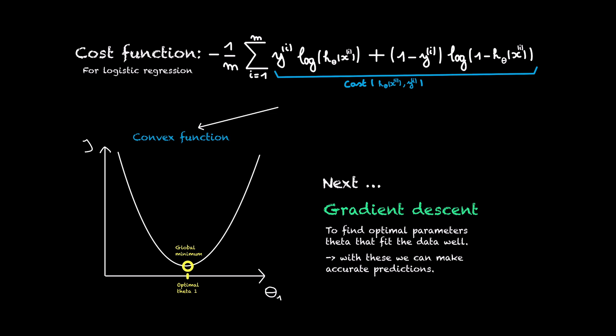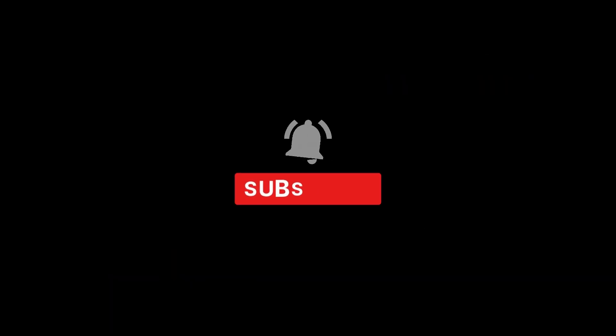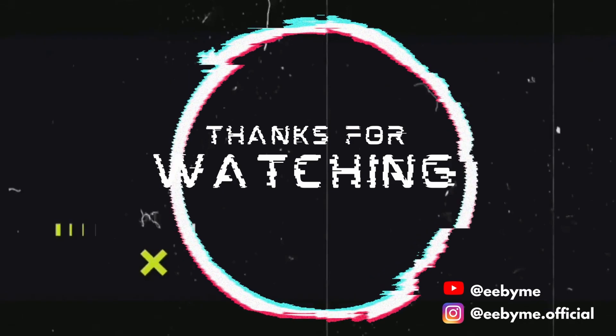So in the next part we will see gradient descent, the optimization algorithm that will find the minimum of our cost function. See you later.